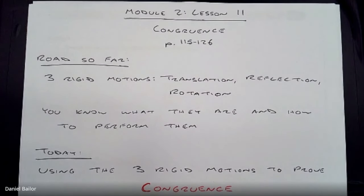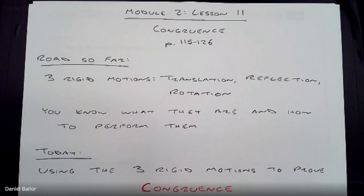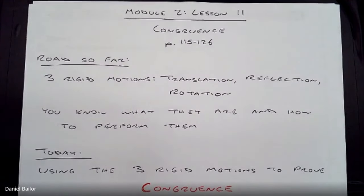Welcome to the next lesson in Eureka Math Module 2. This time it's Lesson 11, all about congruence. You'll need pages 115 to 126 from your Module 2 workbook to follow along. You'll also need a blank piece of paper for notes and all the tools we've been using for Module 2: your transparency, a straight edge, maybe some different colored pens, and your dry erase marker. Make sure you have all these tools ready to go.